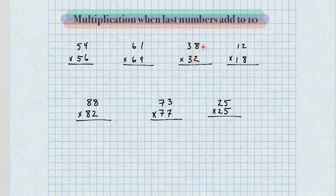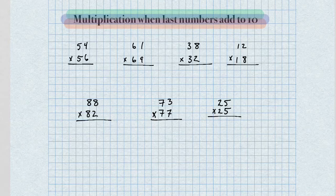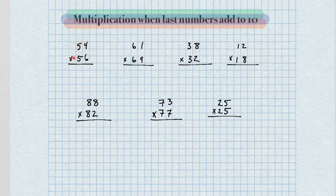The last digits add to 10 and the numbers in the tens place are the same digit. It's pretty simple. We're going to use the formula 'by one more.' It's similar to another video I showed you — squaring numbers that end in 5. Basically, we're going to multiply the next number up from 5, which is 6.